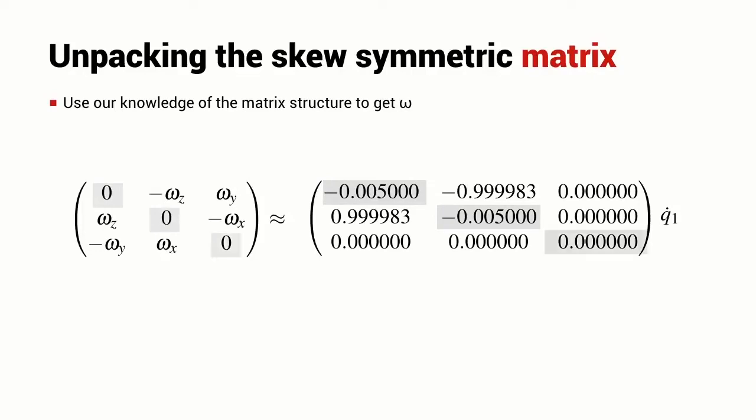If we look at the diagonals, we can see that they are either zero or very, very close to zero, and remember that this is an approximation. So I'm going to say, hand on heart, that these are zeros on the diagonal. It's looking like a skew symmetric matrix to me.